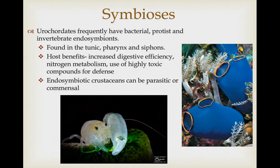Urochordates frequently have bacterial, protist, and invertebrate endosymbionts that can be found in the tunic, pharynx, or siphons. The host benefits from increased digestive efficiency using bacteria to break down food, increased efficiencies in nitrogen metabolism, and use of secondary compounds bacteria produce as toxic defensive chemicals. The endosymbiotic organisms benefit by living safely within their host. There are also some endosymbiotic crustaceans that can live commensally or parasitically in tunicates, depending on how much food they utilize.